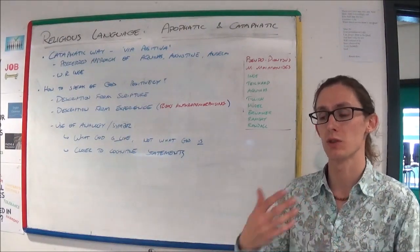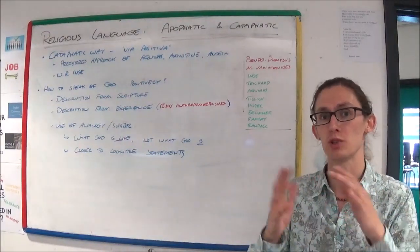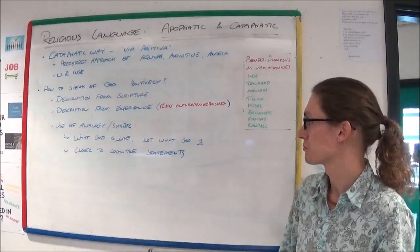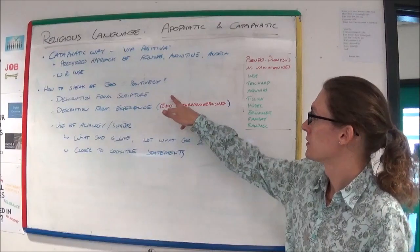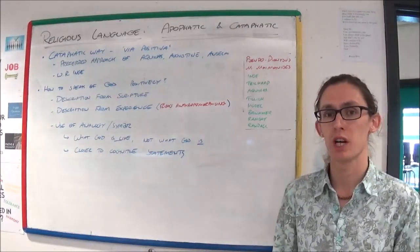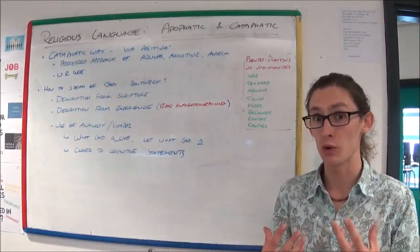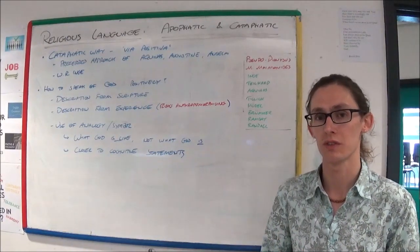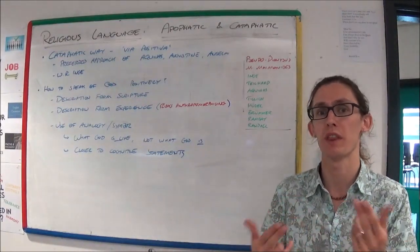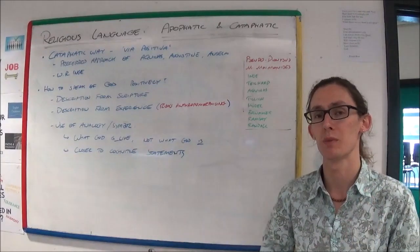The problem with analogy and symbol is that they aren't literally true. But you can at least look, you can say, could this be true? Could this be false? Descriptions from scripture and experience are a little more linguistically cognitive. But when it comes to trying to prove whether they're true or not, they become more difficult.